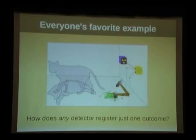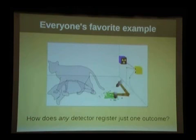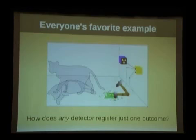Schrödinger's cat is standing for any measurement apparatus whatsoever — anything that records and then reports an observation. So you can think of the measurement problem as: how does any detector ever record just one outcome? How do we ever get one outcome, one experience, from the world? That's the measurement problem — one of two central problems in quantum mechanics. The other is space-time: how does quantum mechanics link up with space-time? I'm going to focus on the measurement problem.